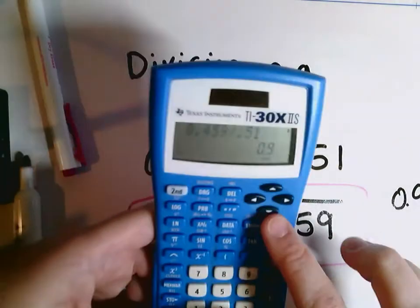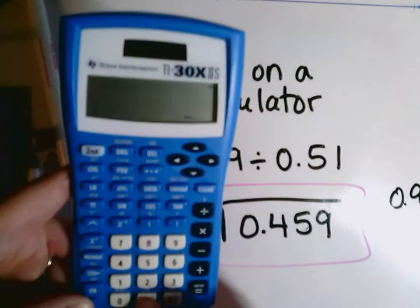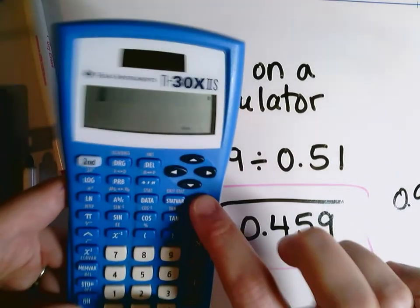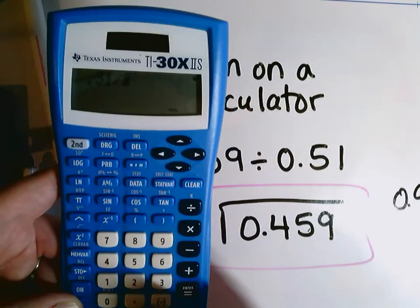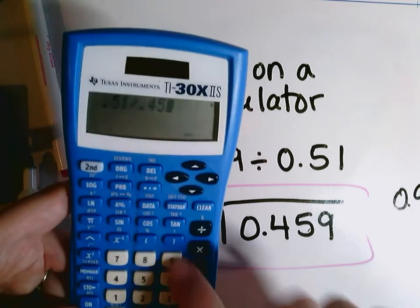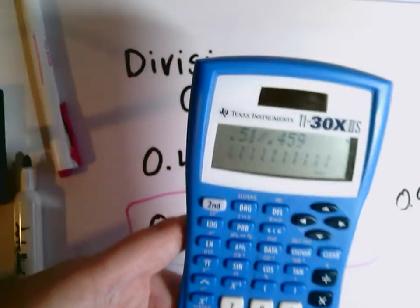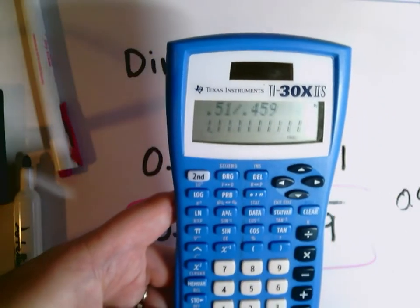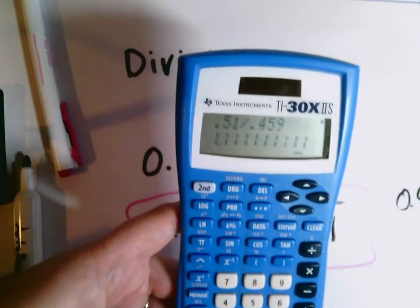If I put it in backwards, 51 hundredths divided by 459 thousandths, I get 1.111111 repeating, which is not the correct answer.